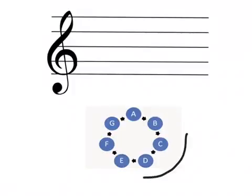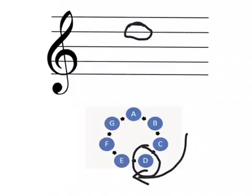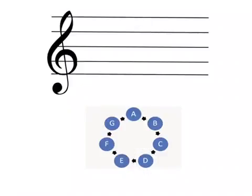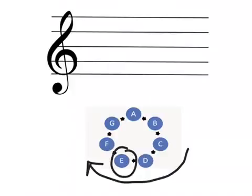Still following our pattern, you can see that the next letter we have is D. D sits on the fourth line in the treble clef staff. Now, because you're so smart, you will have noticed that as we follow our pattern, we are going to start over with the letter E. And that's exactly right. This time, our E sits on the top space of the treble clef staff.